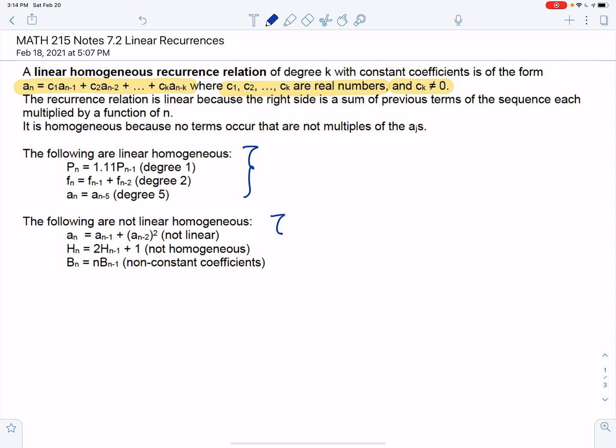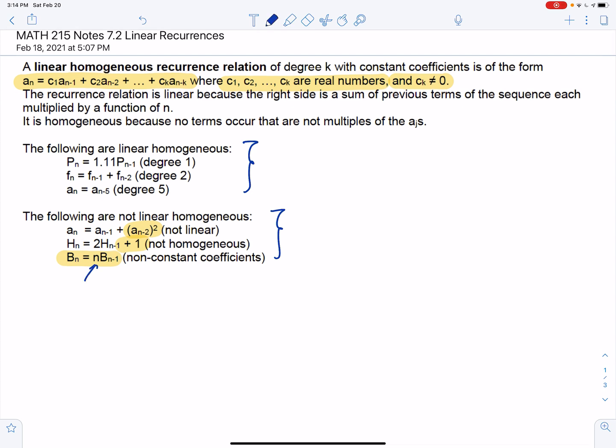These are not linear homogeneous with constant coefficients. The first one, the problem is this one's not linear because you're squaring one of the terms. This one's not homogeneous because the plus 1 is there. Homogeneous means that only terms of the sequence are involved. And this one would be linear, but there is not constant coefficients because of the n. So we're only solving the ones that have constant coefficients.